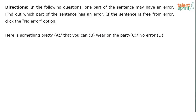Moving forward. Here is something pretty that you can wear on the party. There is something pretty. Someone said, Part A: change 'here' to 'there.' But why? There is something pretty that you can wear. This is a conversation where somebody has probably identified a nice dress or attire that person A has identified for person B to wear. So 'here' is the more appropriate thing. So this is correct; this is wrong.